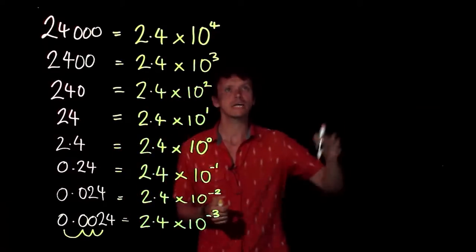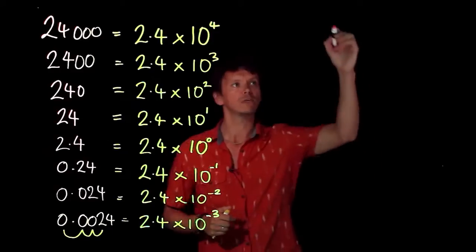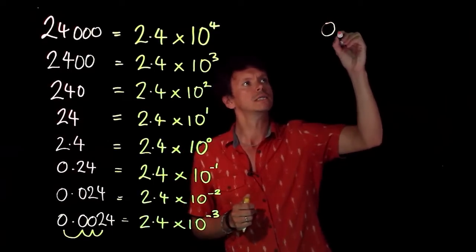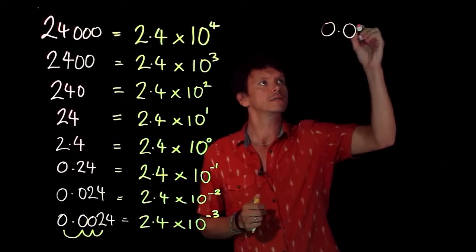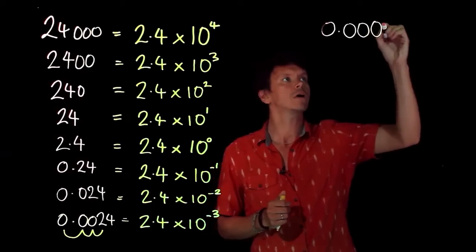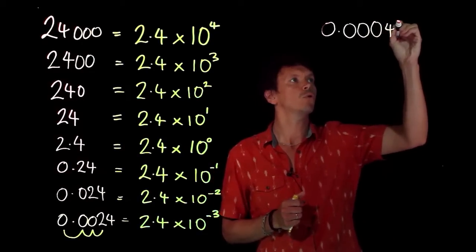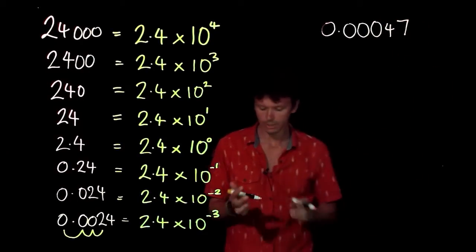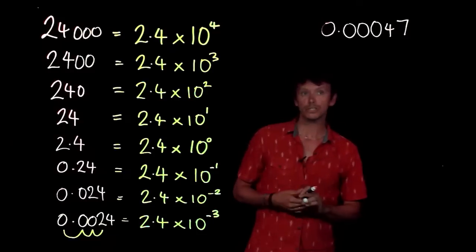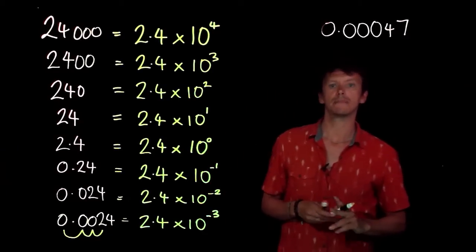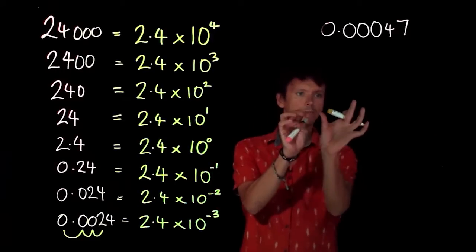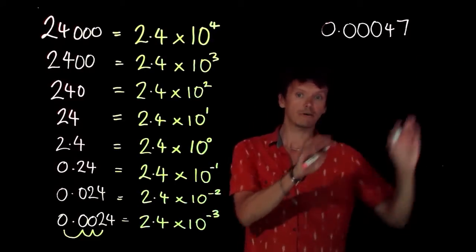Let's take an example rather than working from this pattern. Let's take 0.00047 and we want to put that number into standard form scientific notation. We know we need two numbers: something multiplied by 10 to the power of something.